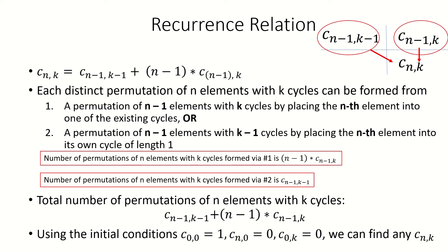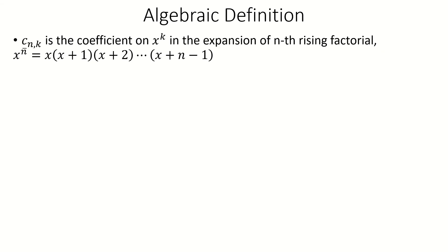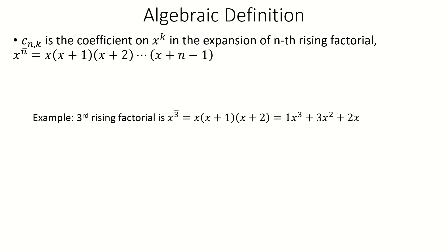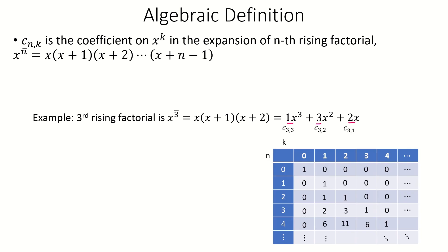Now let's look at an equivalent algebraic definition of the unsigned Stirling numbers of the first kind. The unsigned Stirling number c sub n k can be defined as the coefficient on the k-degree term in the nth rising factorial, which is the product of linear factors x, x plus 1, x plus 2, up to x plus n minus 1. For example, with n equal to 3, the rising factorial is x times x plus 1 times x plus 2, which expands to x cubed plus 3x squared plus 2x. The coefficient on the kth degree term is indeed c sub 3 k, which you can verify in our table.